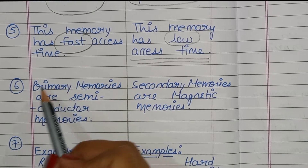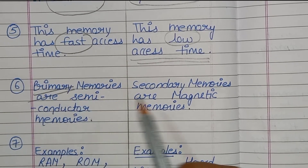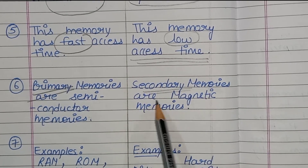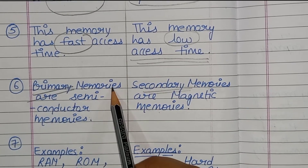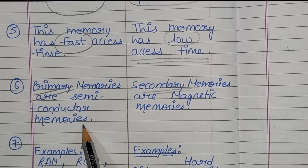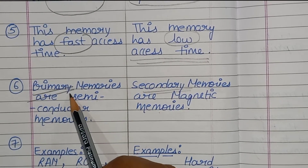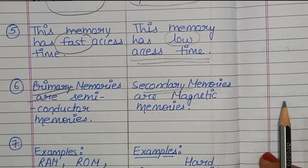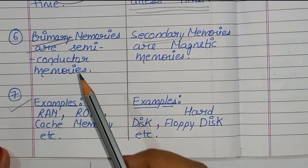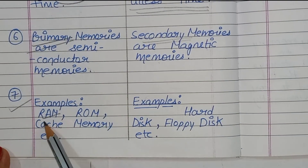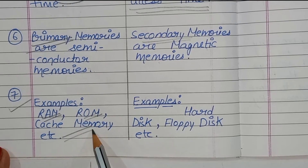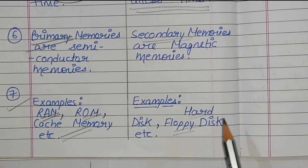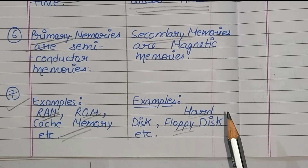The next difference is primary memory is semiconductor memory, while secondary memory uses magnetic memory. Examples of primary memory are RAM, ROM, and cache memory. Examples of secondary memory are hard disk and floppy disk.